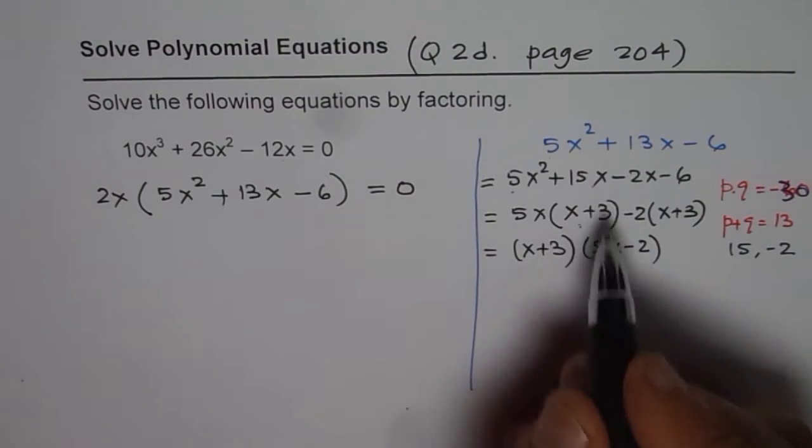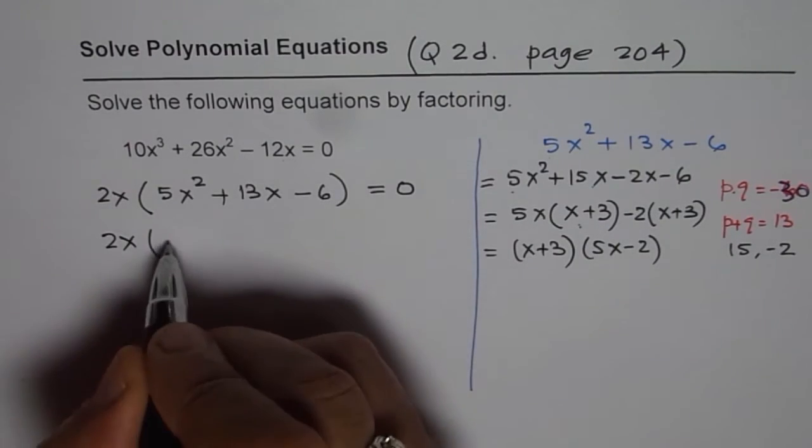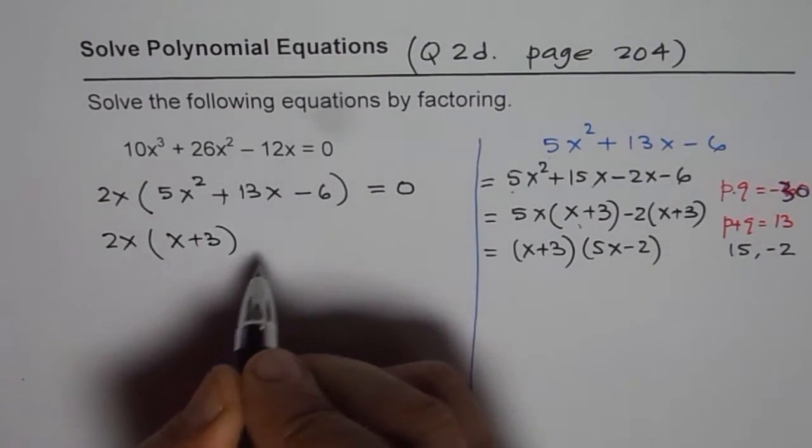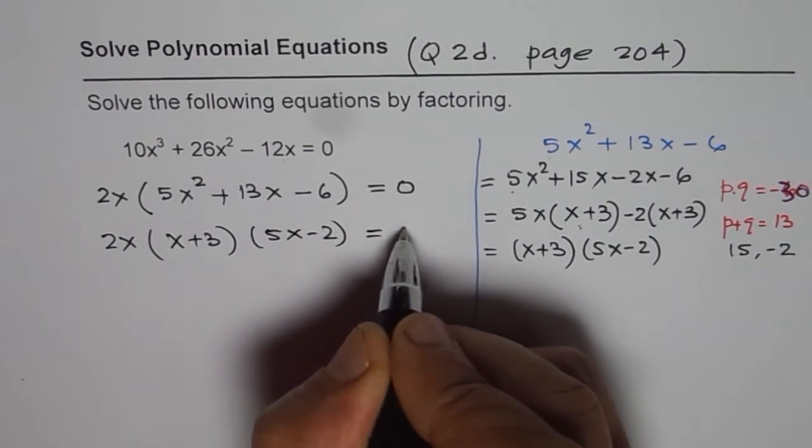So, that is how you can factor it and replace. So, we get 2x times x plus 3 times 5x minus 2 equals to 0.